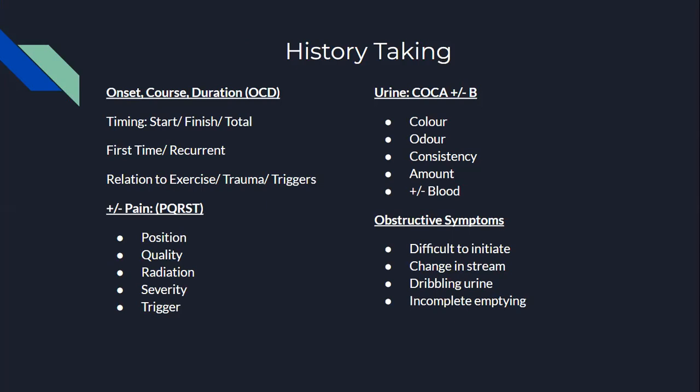Ask about the timing. When did it start? When did it finish? How long did it last for? Is this the first time it happened? Has it happened before? If so, how many times, and when? Ask about any changes in lifestyle recently — this could help with your differential diagnosis. If the patient had pain with hematuria, ask about PQRST.